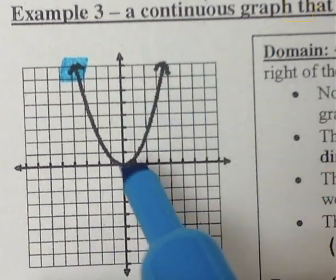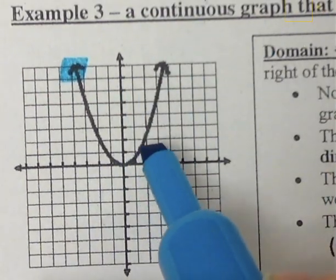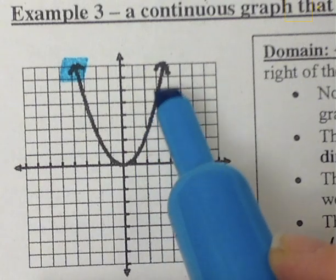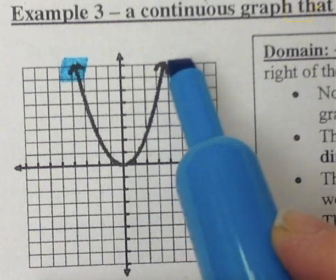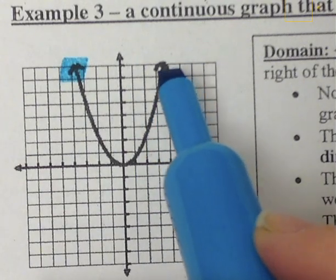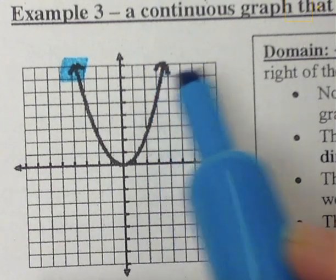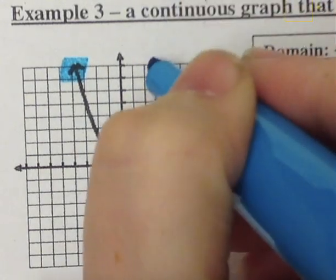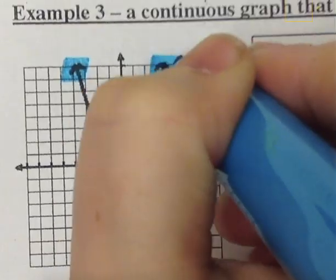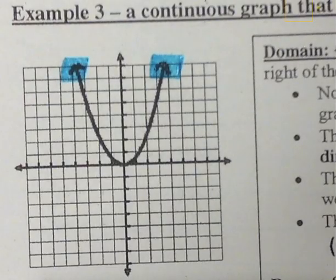For the right-hand side, as I move to my graph, my right-hand side actually hits an arrow again. So I'm going to highlight the arrow for the right-hand side.